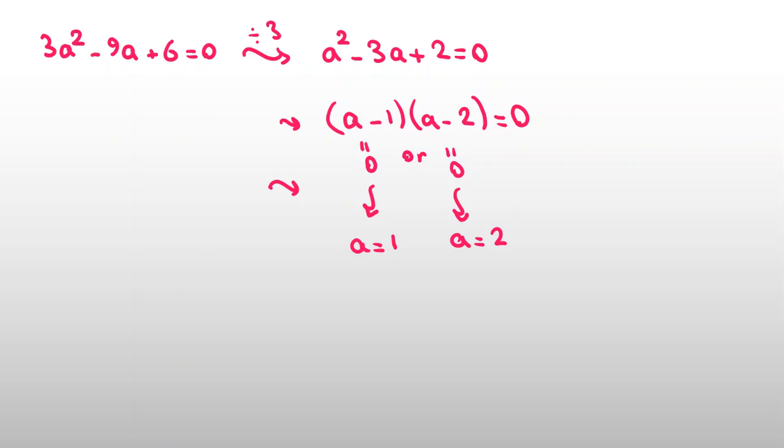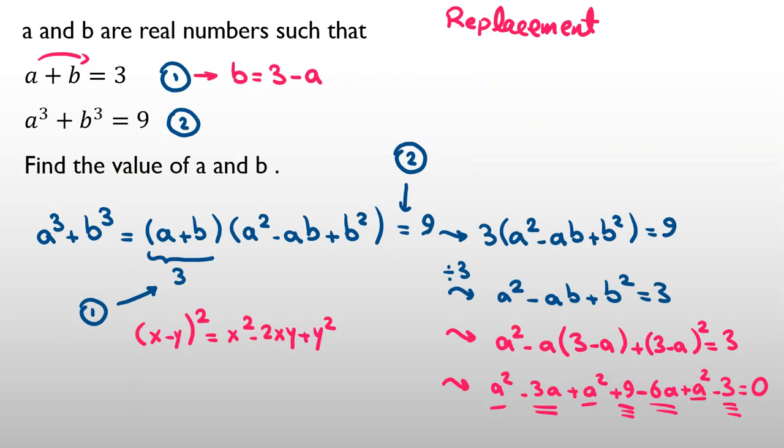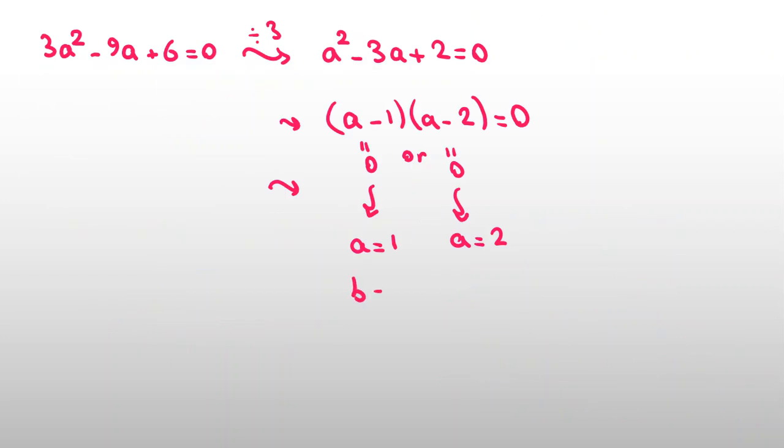a is 1, and the other one, a is 2. So what about b? a plus b is 3, and we said b is 3 minus a. b is 3 minus a, 3 minus 1 is 2. And here, b is 3 minus a, which is 1. So the answers have been switched.